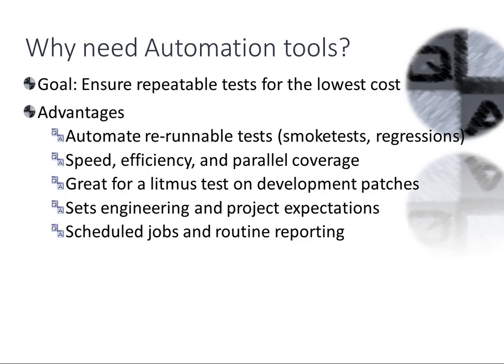Regression tests are a larger set of smoke tests — functionality that worked before but isn't necessarily the most critical. If you have 100 automated tests on your camera and five are real smoke tests, it'd be nice to run all 100 again on the next build. Automation also promotes speed — it's efficient and parallel. You can kick off tests at night, go to sleep, and wake up with results ready.